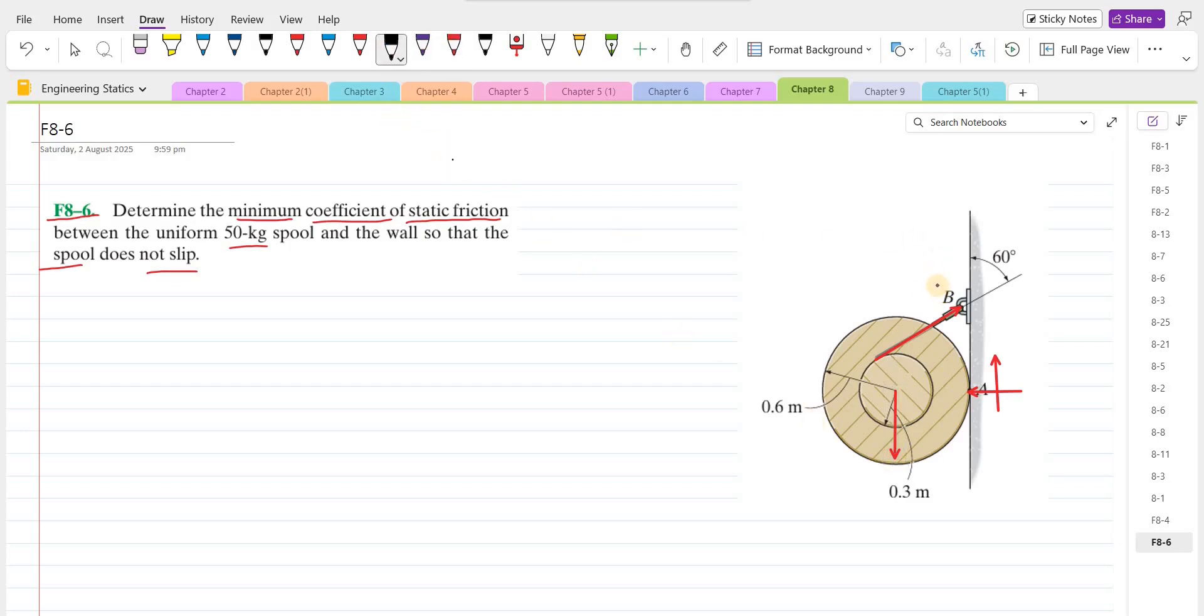Let's label them. This is T, this is FA, this is NA, and this is the weight W. Now we have to resolve this force T into its components. So this angle is 60 degrees, that angle is also 60 degrees because they are corresponding angles. So the vertical component is T cos 60 and the horizontal component is T sine 60.